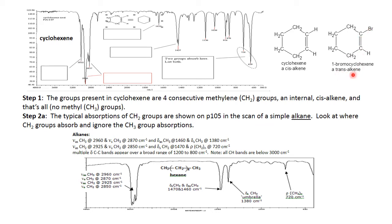It makes a difference in infrared interpretation — there are differences between cis and trans, so now you're aware of how to identify them. Step two: the typical absorptions of methylene groups are found on page 105 in the scan of a simple alkane. The reason is that absorptions of both methylene and methyl groups are only written once on the generic scans. The first scan is that of an alkane, so rather than put them on all the scans and be redundant, they're only on that first generic scan. Since there is no methyl group in cyclohexene, you're going to ignore the asymmetric and symmetric stretches of the methyl group.